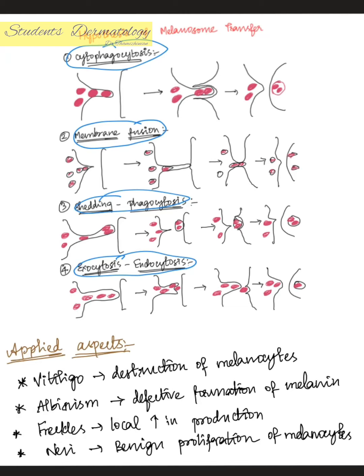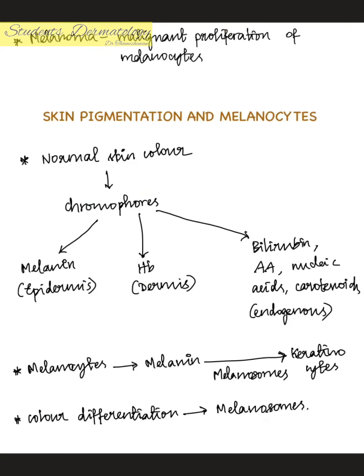Applied aspects: (1) Vitiligo — destruction of melanocytes. (2) Albinism. (3) Freckles — local increase in production of melanocytes. (4) Nevi. (5) Melanoma — malignant proliferation of melanocytes.